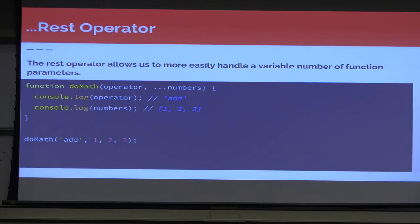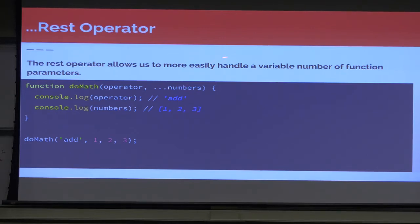The other operator here is the rest operator, and it's almost the exact opposite of spread. The rest operator allows us to more easily handle a variable number of function parameters. Let's say we have a function doMath that takes in an operator and a set of numbers. As you can see, it can be any length. No matter what, the second variable will always be an array of all the other variables passed into this function. That makes it really easy when you have a number of arguments but you don't know exactly how many you're going to need — you want it to be variable. This allows for really clean code with full flexibility.